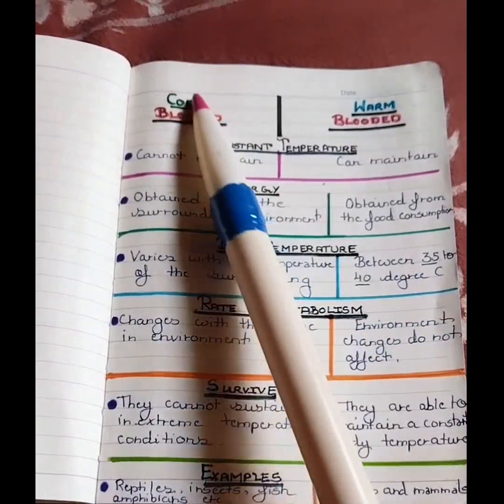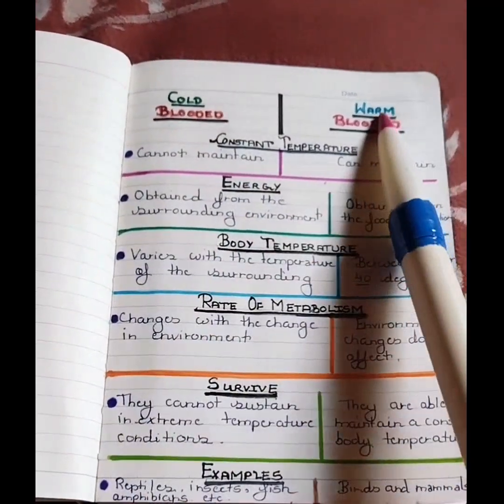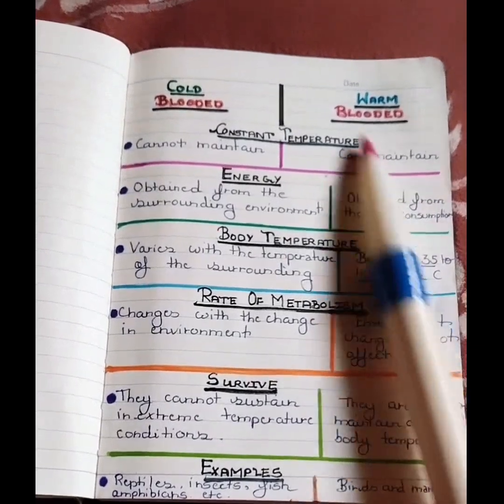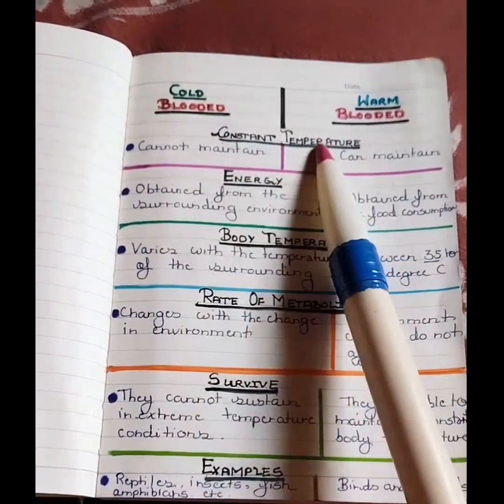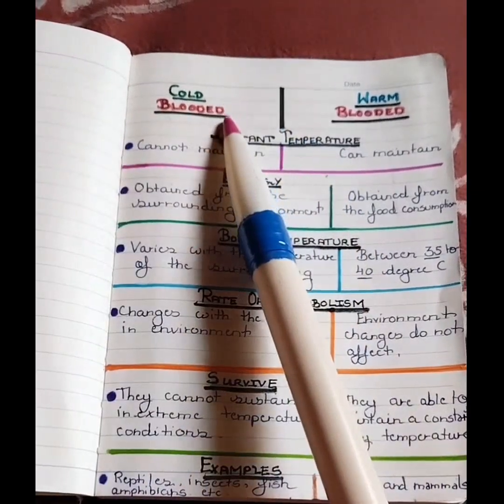When we talk about constant temperature, cold-blooded cannot maintain constant temperature, whereas warm-blooded can maintain constant temperature.